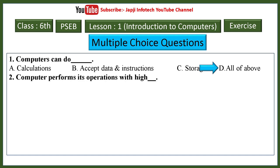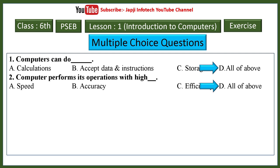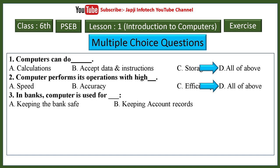The second question: computer performs its operations with high dash. Options are speed, accuracy, efficiency, and all of these. The right answer is all of the above. The third question: in a bank, computer is used for dash. Options are keeping the bank safe, keeping account record, keeping bank clean, and none of these. The right answer is: computer is used for keeping account record.